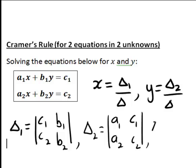And delta is the matrix determinant where we put in the coefficients of the unknowns x and y, so the determinant a1, b1, a2, b2.